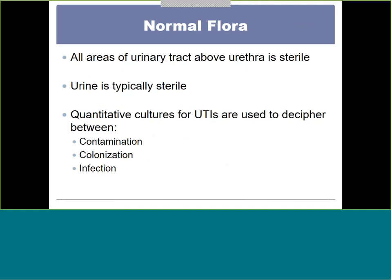Normal flora of the urinary tract, especially above the urethra, should be pretty much sterile. Urine is supposed to be sterile, especially if the patient has done a really good job cleansing themselves when they collect it. Contamination or normal flora contaminants occur because they didn't cleanse well enough upon collection. When we collect for urine cultures, we do a quantitative culture collection using a calibrated loop, streaking once down the center and then back and forth, so that we can come up with a colony count to help determine if it's a contaminant, a colonization, or a real infection.